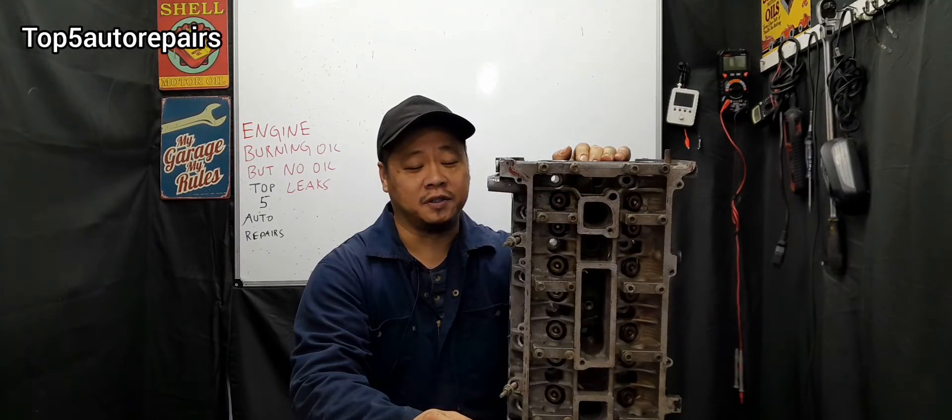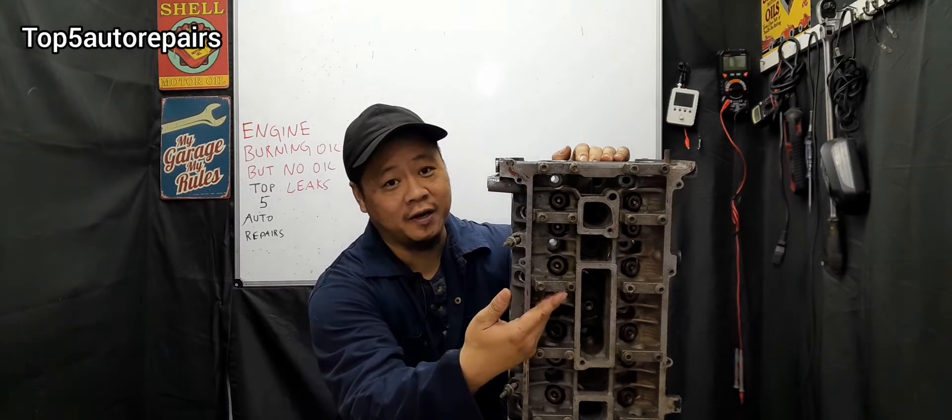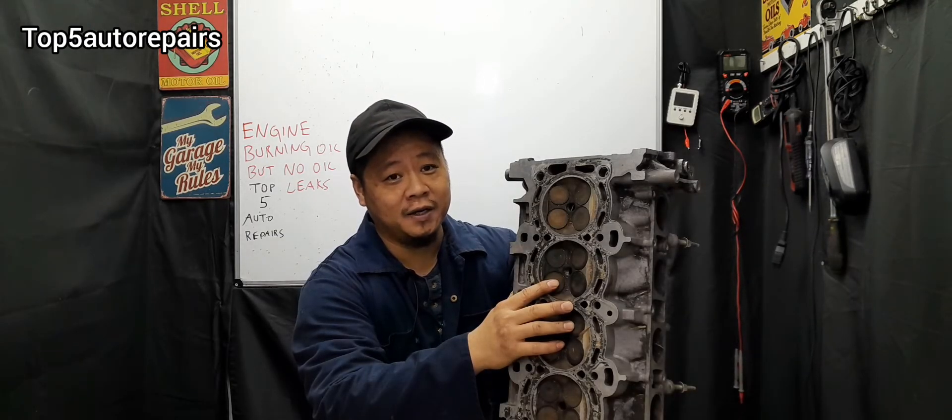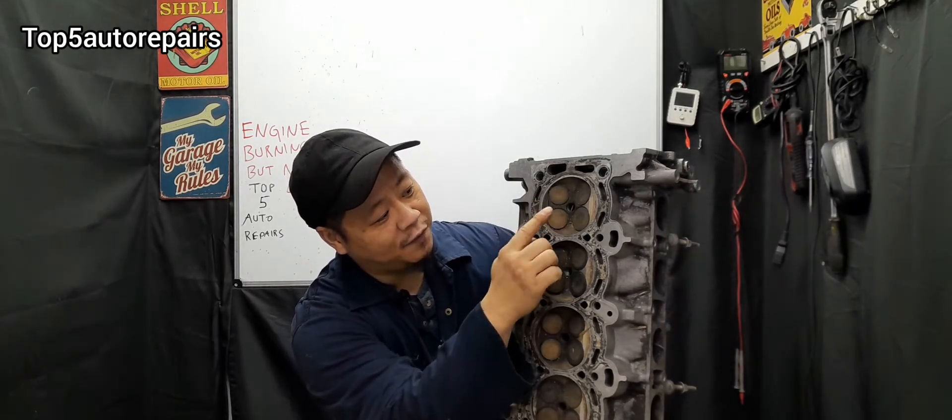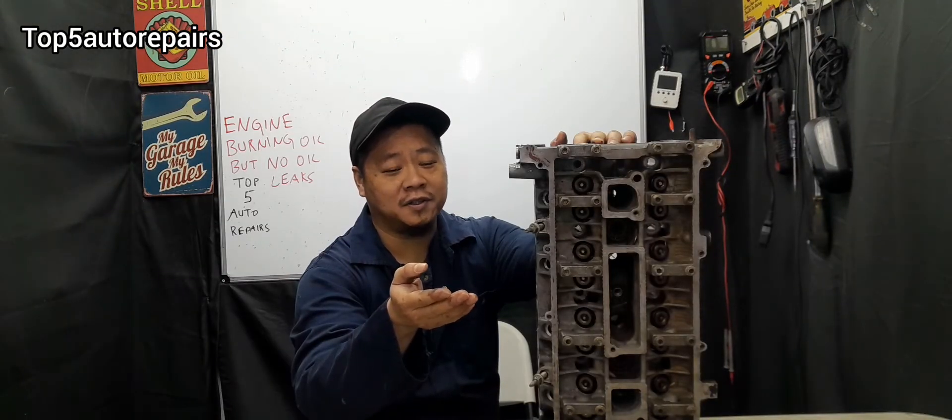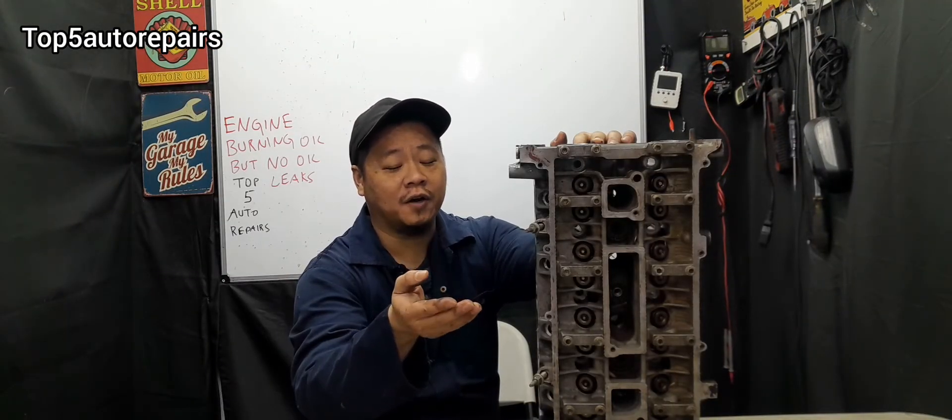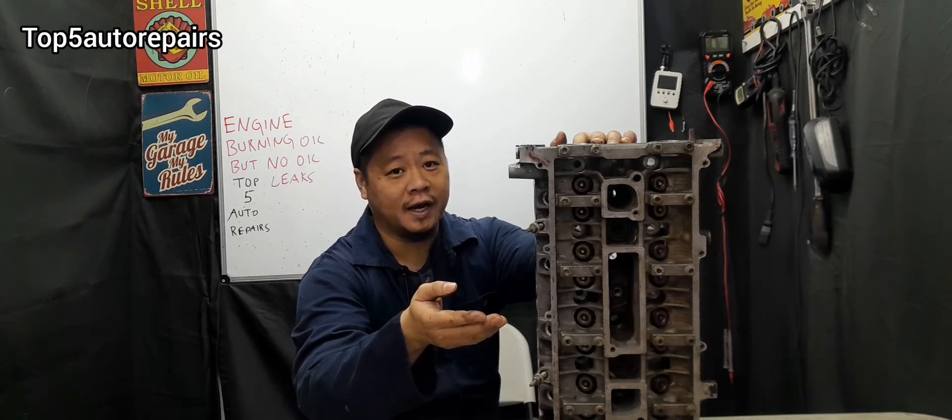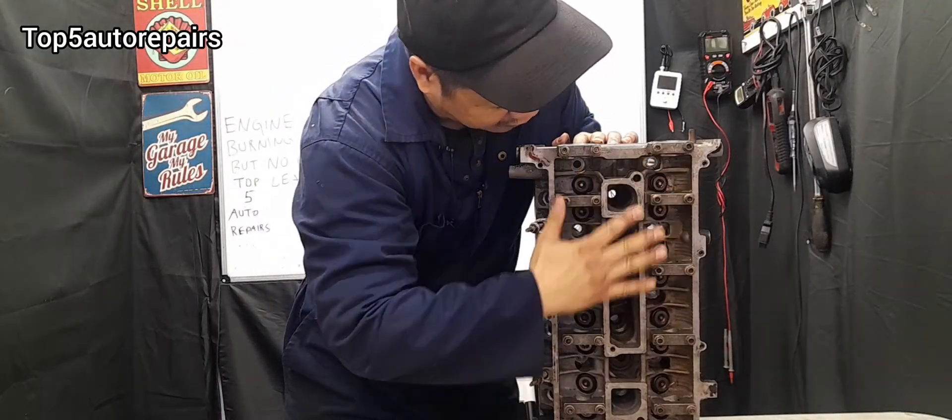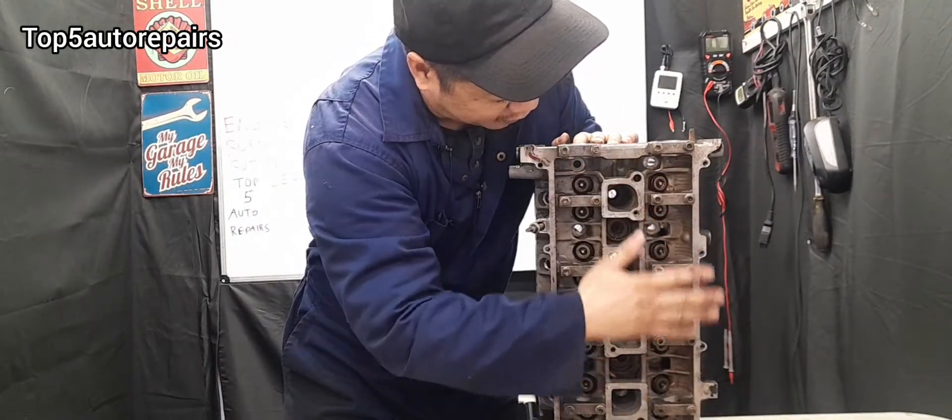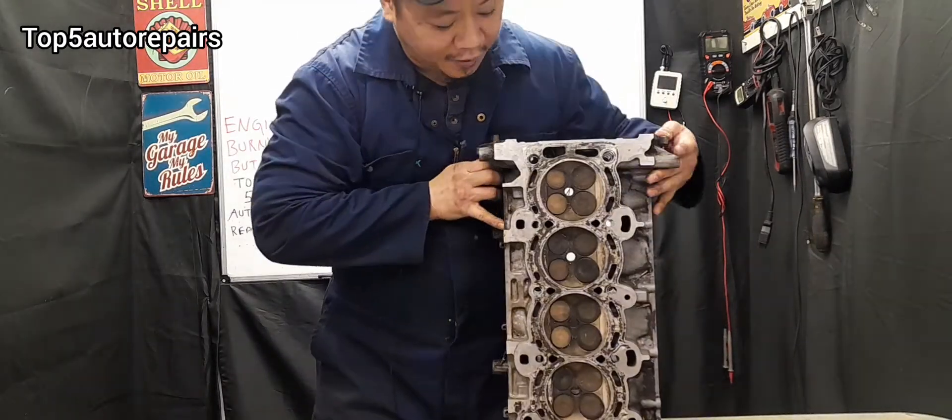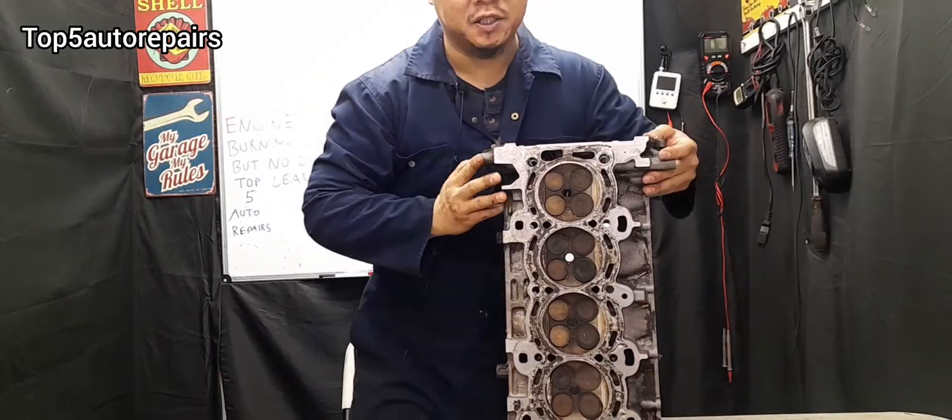The next common reason why you're losing engine oil is because you have bad valve stem seals. If the valve stem seals become bad, it's going to allow engine oil to seep past through the valve and go straight into the combustion chamber. What I'm going to tell you is, if you have bad valve stem seals, when you turn off your engine and your vehicle sits overnight, all the engine oil that accumulates on the top will seep past through the bad valve stem seals and find its way into the combustion chamber.